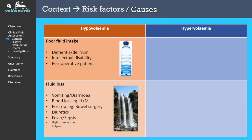There are also situations of fluid loss. Vomiting and diarrhea is a very common one. Blood loss with hematemesis and melena. Some surgeries, especially intra-abdominal surgeries, can lead to a large amount of fluid loss, especially if there's evaporation from the bowels in the case of a laparotomy. Diuretics, used commonly on the wards especially for patients with heart failure, can lead to hypovolemia when they're used in excess.